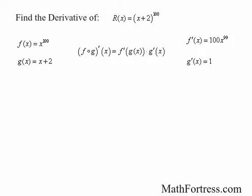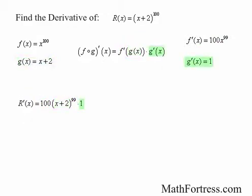Using the chain rule, the derivative of r of x is equal to the derivative of f evaluated at g of x times the derivative of g of x. So the derivative of r of x equals 100 times the quantity x plus 2 raised to the power of 99 times 1, which simplifies to 100 times the quantity x plus 2 raised to the power of 99.